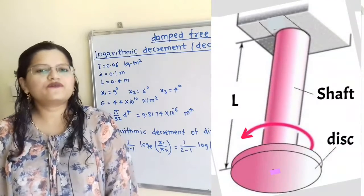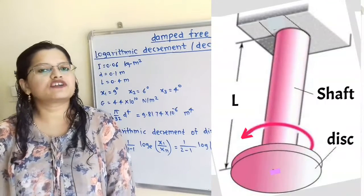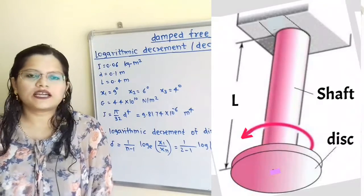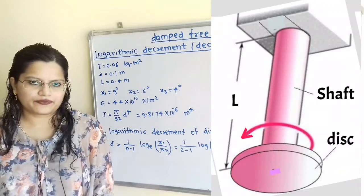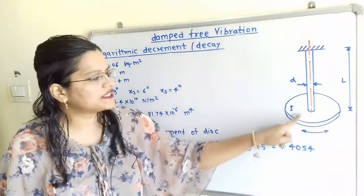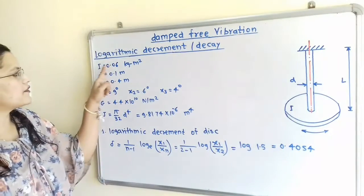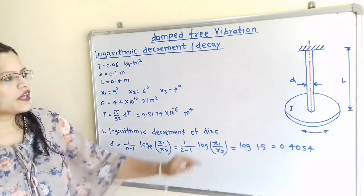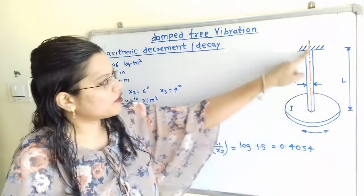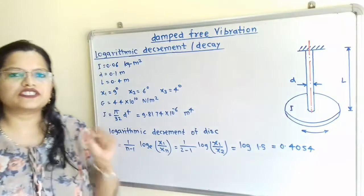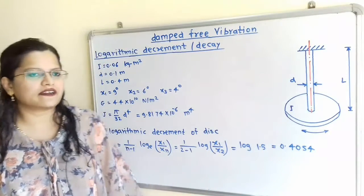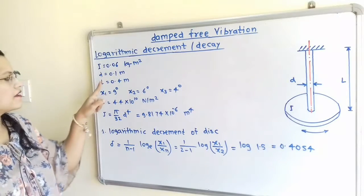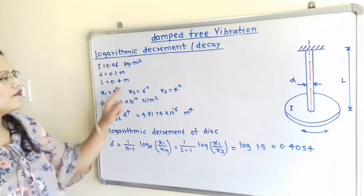This is the question for torsional vibration of the shaft and disc arrangement. Let us understand the given data. Mass moment of inertia of the disc is given: I = 0.06 kgm². The diameter and length of the shaft are also mentioned in mm, but we have to use the standard unit meter. So, D = 0.1 m and L = 0.4 m.